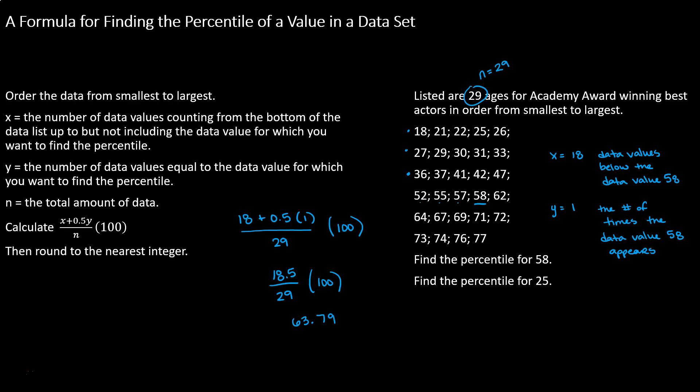We don't talk about percentiles as fractions or decimals. So what we're going to do here is round that result to the nearest integer. Integers are whole numbers, positives and negatives. We're looking at a positive 63.79. The 7 in the tenths place tells us to round up to 64. So we're going to round up to 64. That tells us that 58 is the 64th percentile. So p64 is equal to 58.